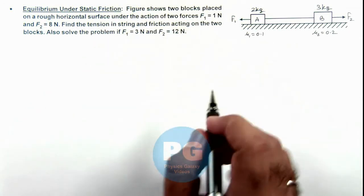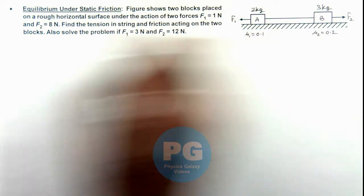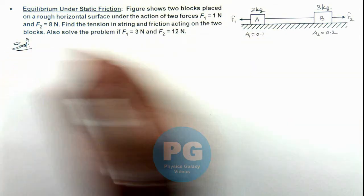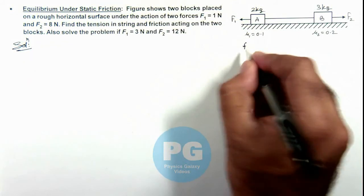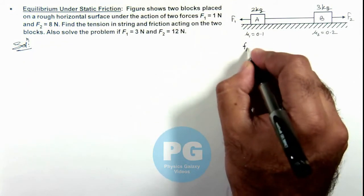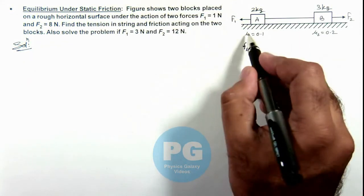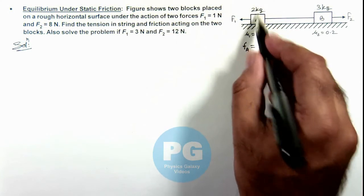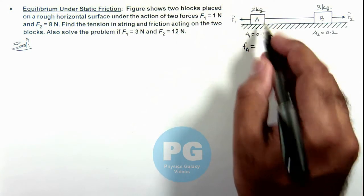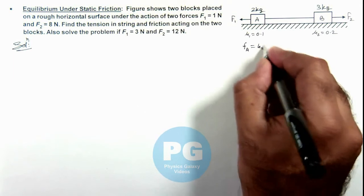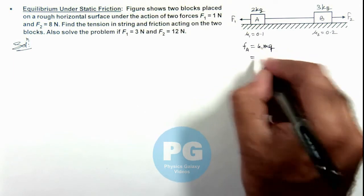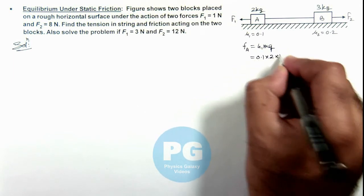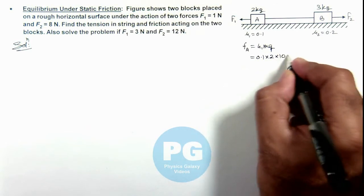In this situation, first we'll calculate the limiting friction acting on the 2 blocks. For block A we can write the limiting friction F_A as mu times normal reaction, where the normal reaction equals the weight of the block. So this can be written as mu1 times mg, which is 0.1 multiplied by 2 multiplied by 10, and that is 2 newton.